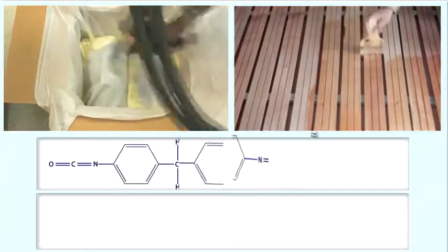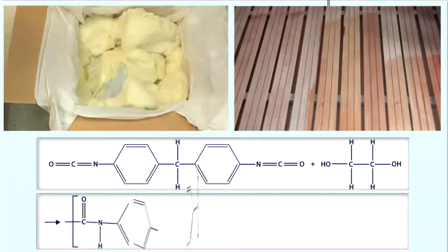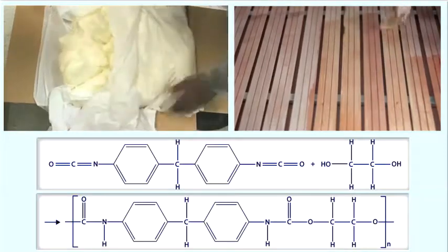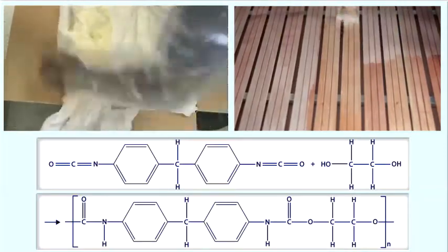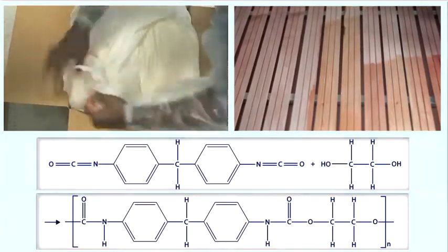Polyurethane is made by reacting an isocyanate with a polyol in the presence of a catalyst. Physical and mechanical properties are dependent on the isocyanate and hydroxyl groups and their formulation ratio.